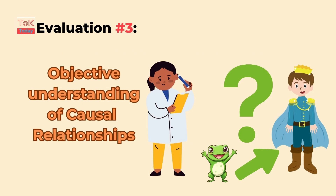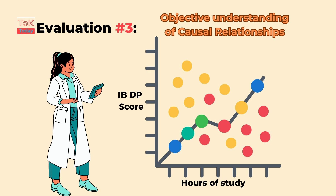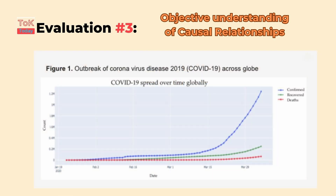Evaluation point three: the objective understanding of causal relationships. Mathematical knowledge enables the development of standardised and objective measures of causal relationships between phenomena. By using statistical techniques, researchers can determine the strength and significance of correlations, thereby identifying potential causal links. For example, epidemiologists use mathematical models to understand the spread of diseases and the impact of interventions.